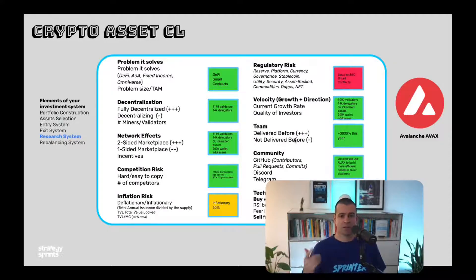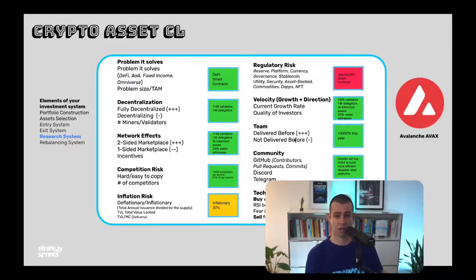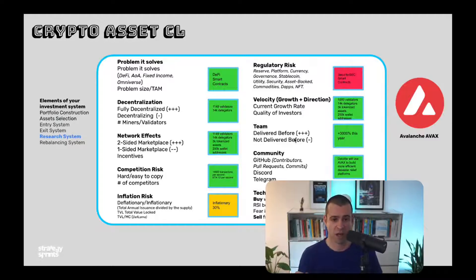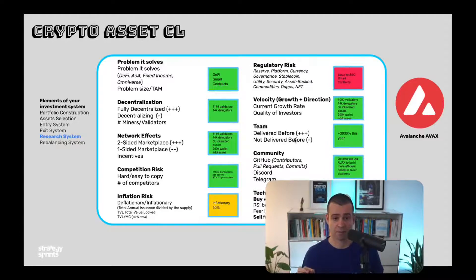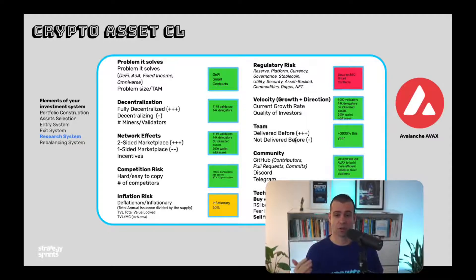Point five: inflation risk. You want to pick assets that are deflationary, not inflationary. Deflation is calculated as total annual issuance divided by the supply. Then check the total value locked (TVL) and the ratio of TVL to market cap — you can do this on DeFi Llama.